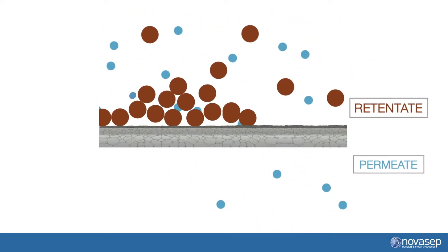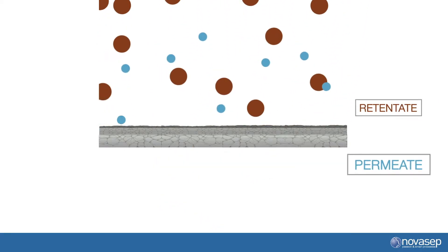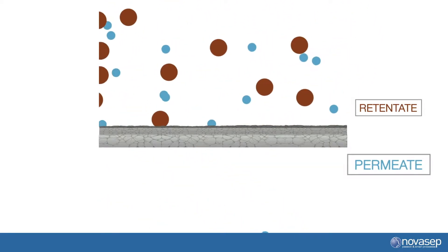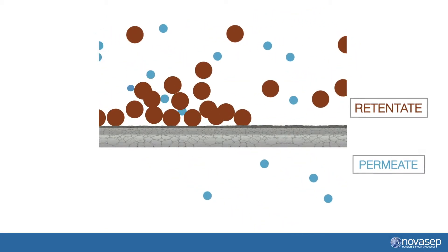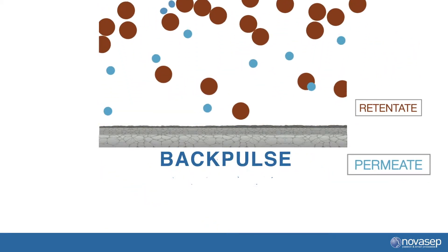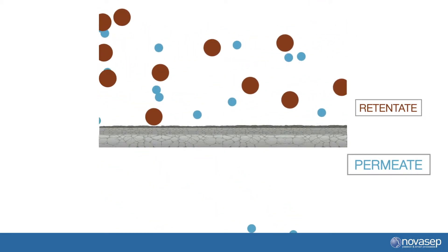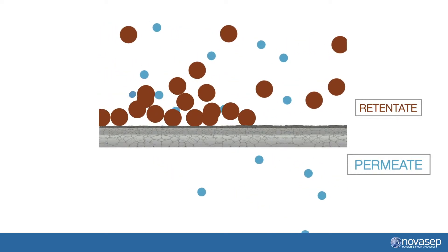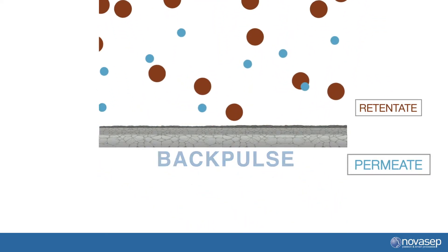Decreased flux can be compensated by increasing the TMP, but this will often work only for a short period of time before you need to clean the membranes. Another method is to apply a back pulse, meaning a short period of TMP inversion where permeation occurs in reverse. Back pulsing removes part of the resistance due to fouling and therefore restores permeation flux performance without cleaning. CIP frequency can be greatly optimized by incorporating back pulsing.